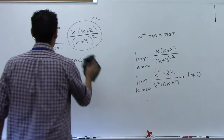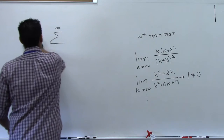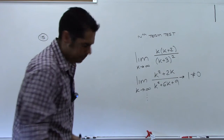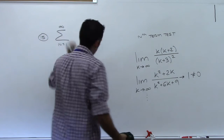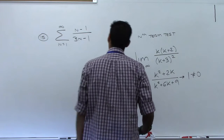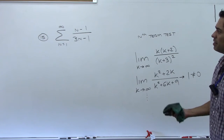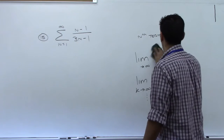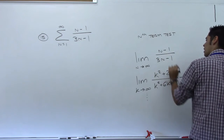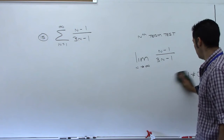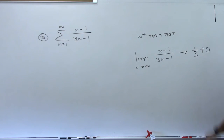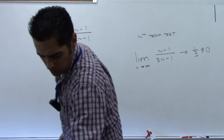Number 15: sum from n=1 to infinity of (n-1)/(3n-1). Same thing — it's not geometric, so try the nth term test. Taking the limit and applying L'Hôpital's rule gives 1/3, which is not zero. So it diverges.